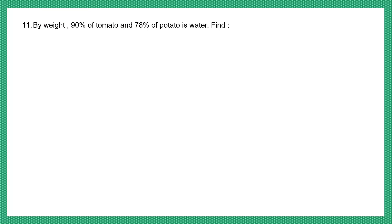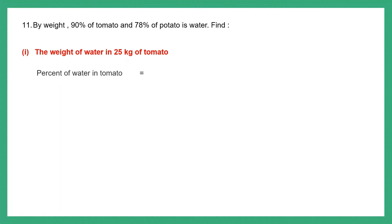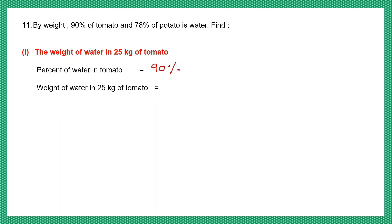Question 11. By weight, 90% of tomato and 78% of potato is water. We need to find the weight of water in 25 kg of tomato. So we'll start by saying percent of water in tomato is 90%. So what will the weight of water in 25 kg of tomato be? We take 90 divided by 100, since it's percent, into 25.